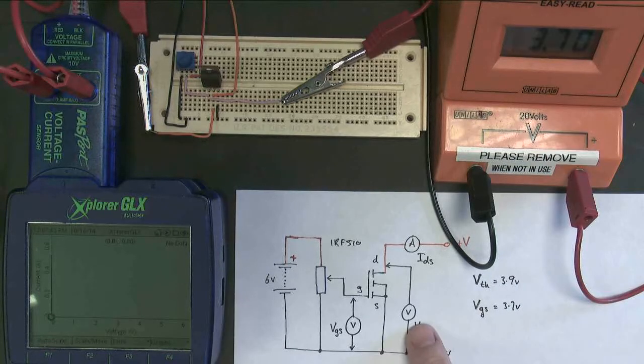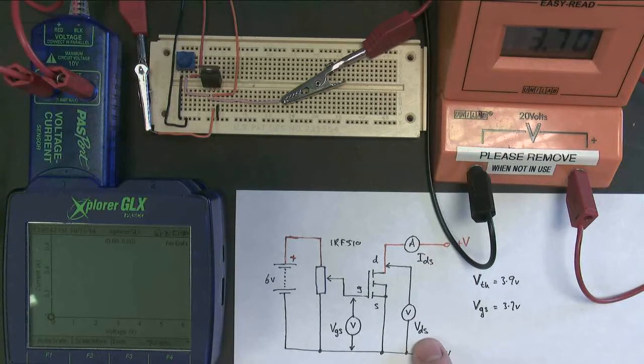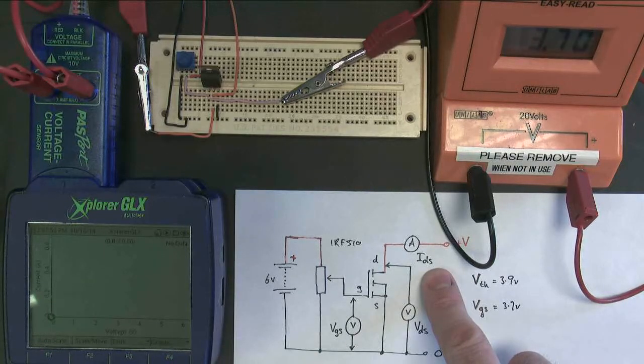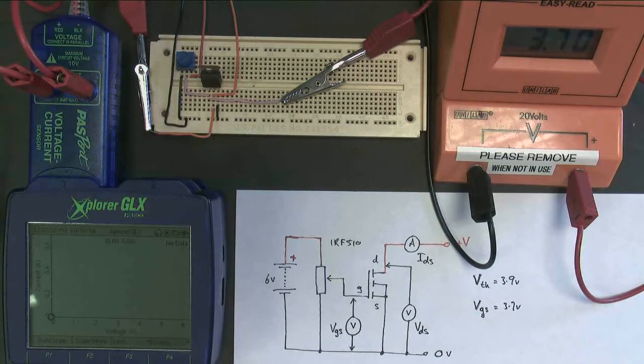I've added an extra voltmeter, which is my data logger, to measure the drain source voltage, and I'm using my data logger to measure the drain source current, as I did before. And recall from our first experiment, the threshold voltage was 3.9 volts.